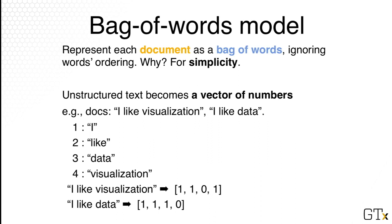What that also means is that our text documents — each document — becomes a vector of numbers. For example, say I have two documents. The first one is 'I like visualization' and the second is 'I like data.' Looking at these two phrases, there are four unique words: I, like, data, visualization, and you can assign a number to each — I is 1, like is 2, data is 3, visualization is 4. Once we have this word-to-ID assignment, you can turn the two documents into vectors. 'I like visualization' becomes [1, 1, 0, 1] and 'I like data' becomes [1, 1, 1, 0].